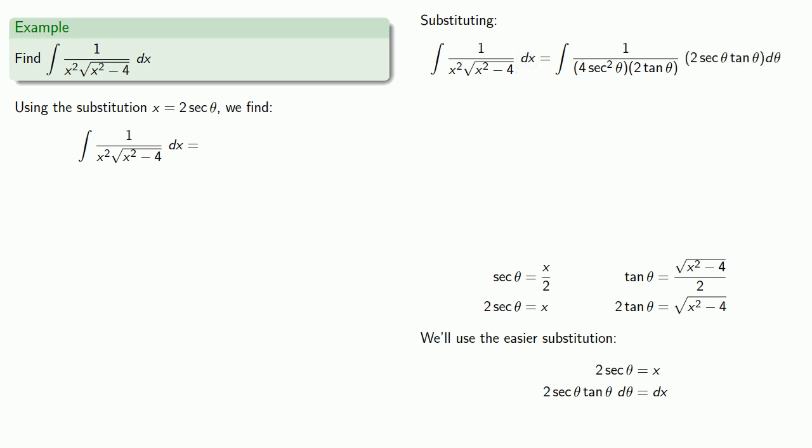We'll do what algebraic simplification we can. After all the dust settles, we're ready to do some calculus. Let's integrate, and we have one quarter sine theta plus C.